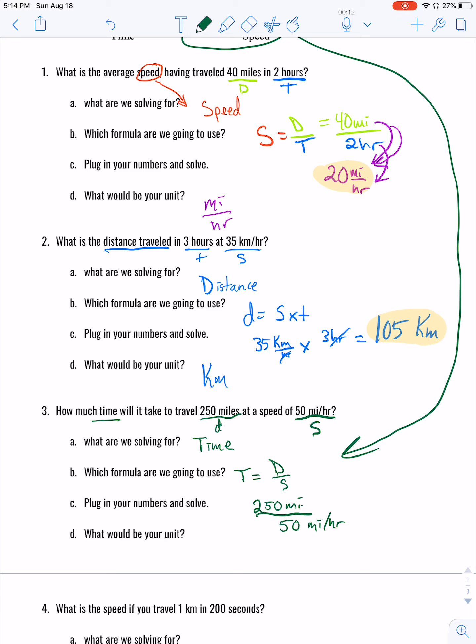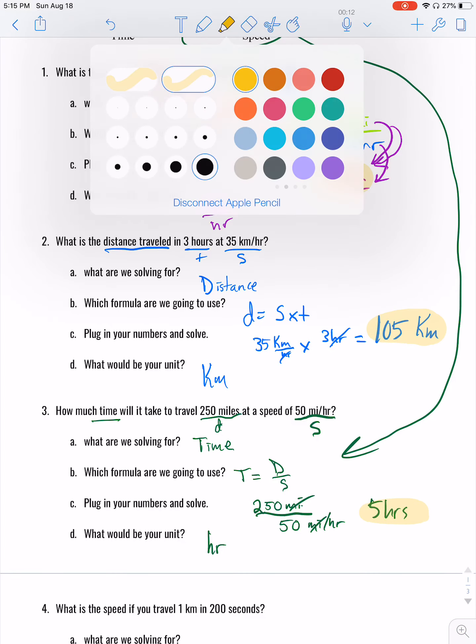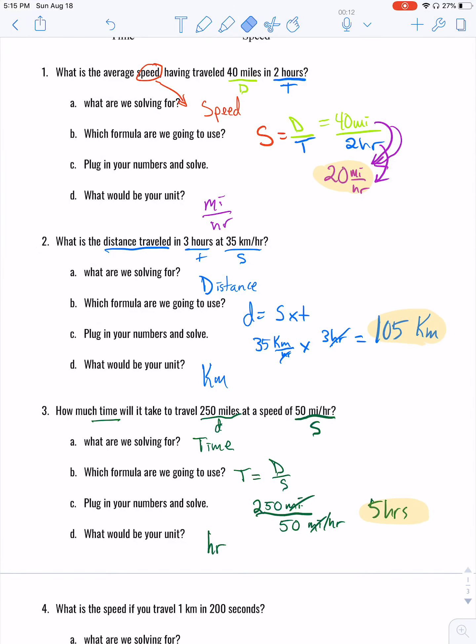So 250 divided by 50, pretty simple now that I think of it, it's just five. Our miles are going to cancel out leaving us with our unit in hours. So five hours will be our answer. And for letter D, what is our unit? Hour. How about the answer here?